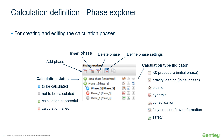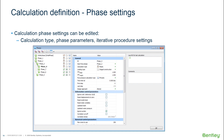The phase settings window contains many options per phase. We can set the calculation type, specify a time interval — for a consolidation phase a consolidation time must be specified here — and there are many more settings such as temporarily treating undrained material as drained. Some settings relate to deformation analysis and some are very numerical, which we try to change as little as possible.